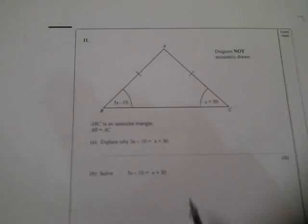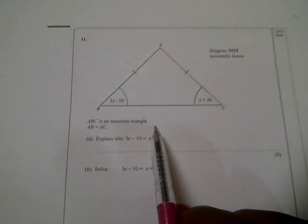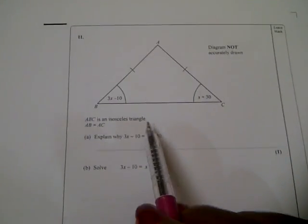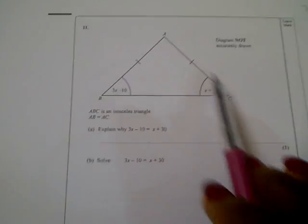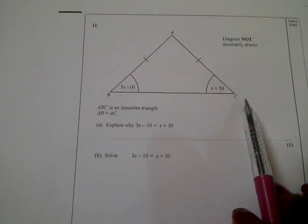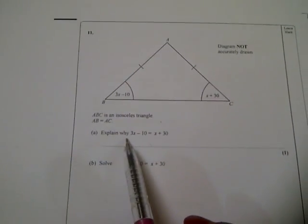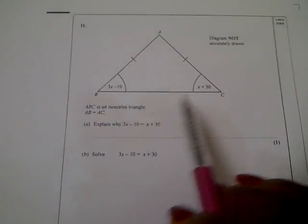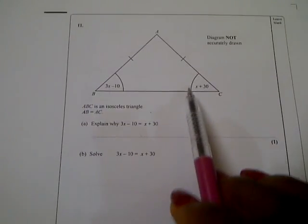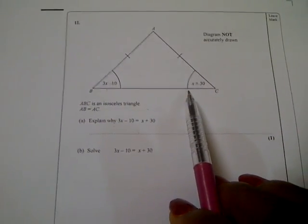Question number 11a says: ABC is an isosceles triangle. AB is equal to AC. Explain why 3x minus 10 is equal to x plus 30.